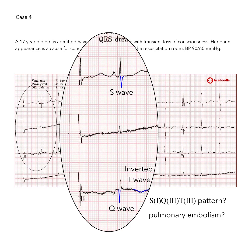This pattern may well be artefactual. We note that the P wave in lead 3 is inverted and that the readout in lead 2 appears to be of very low amplitude. This, in combination with the other findings, raises the possibility of electrode misplacement.